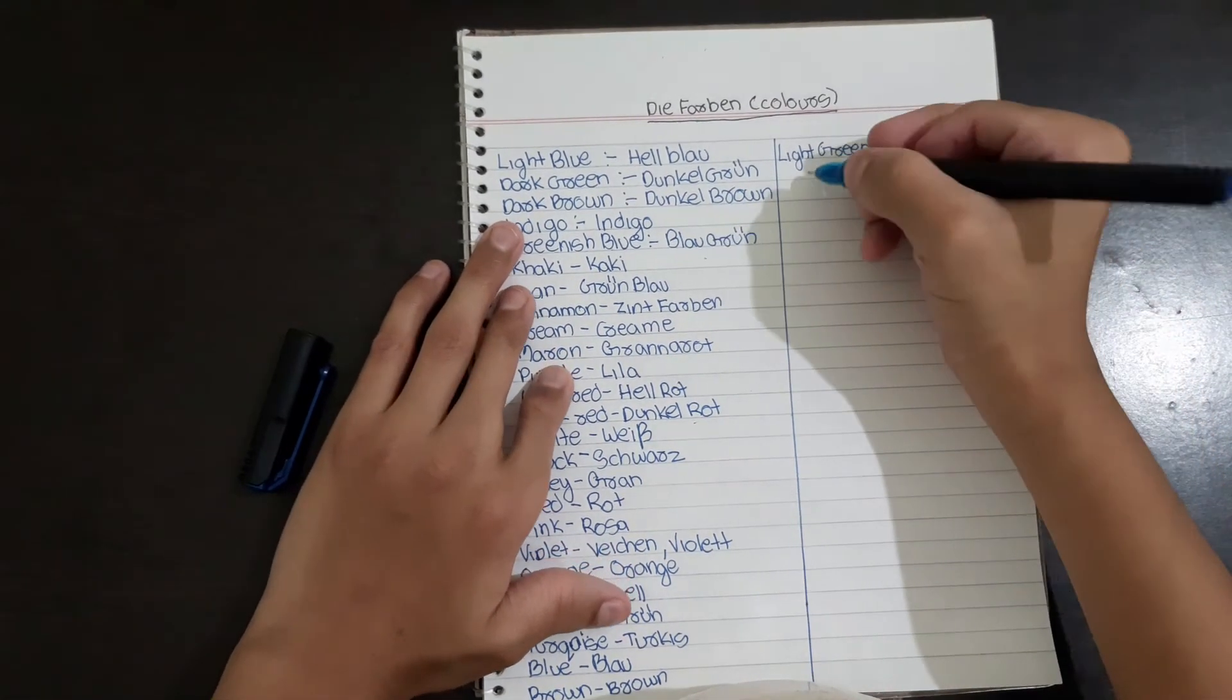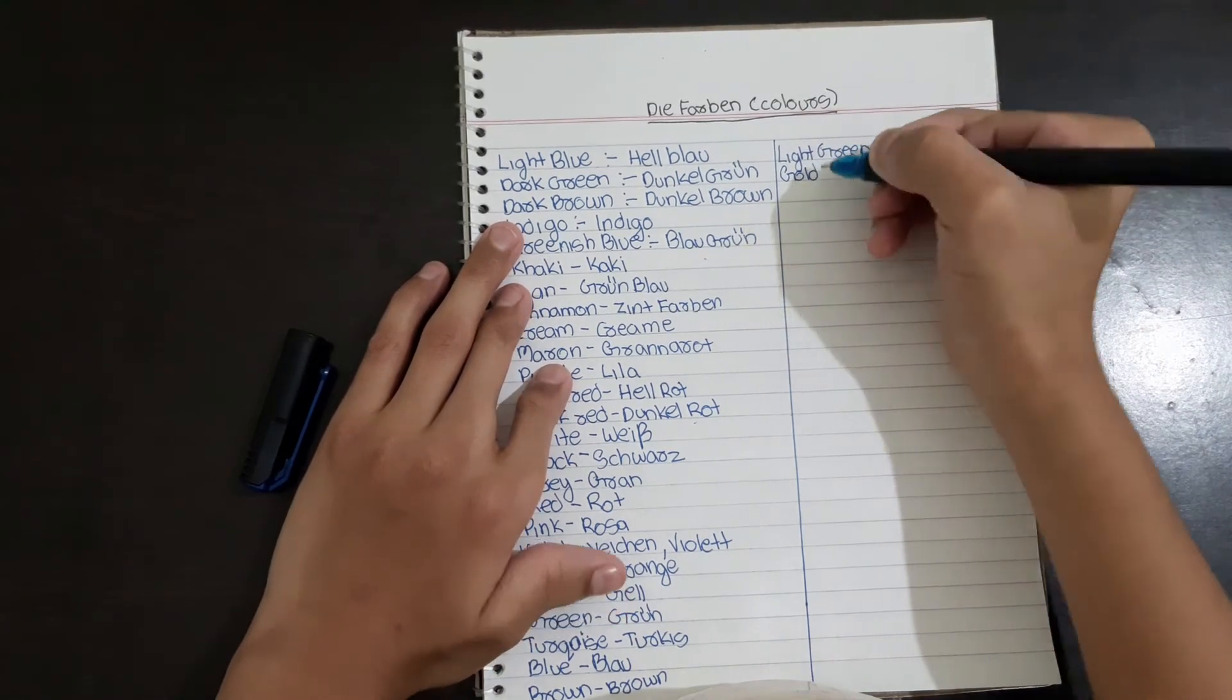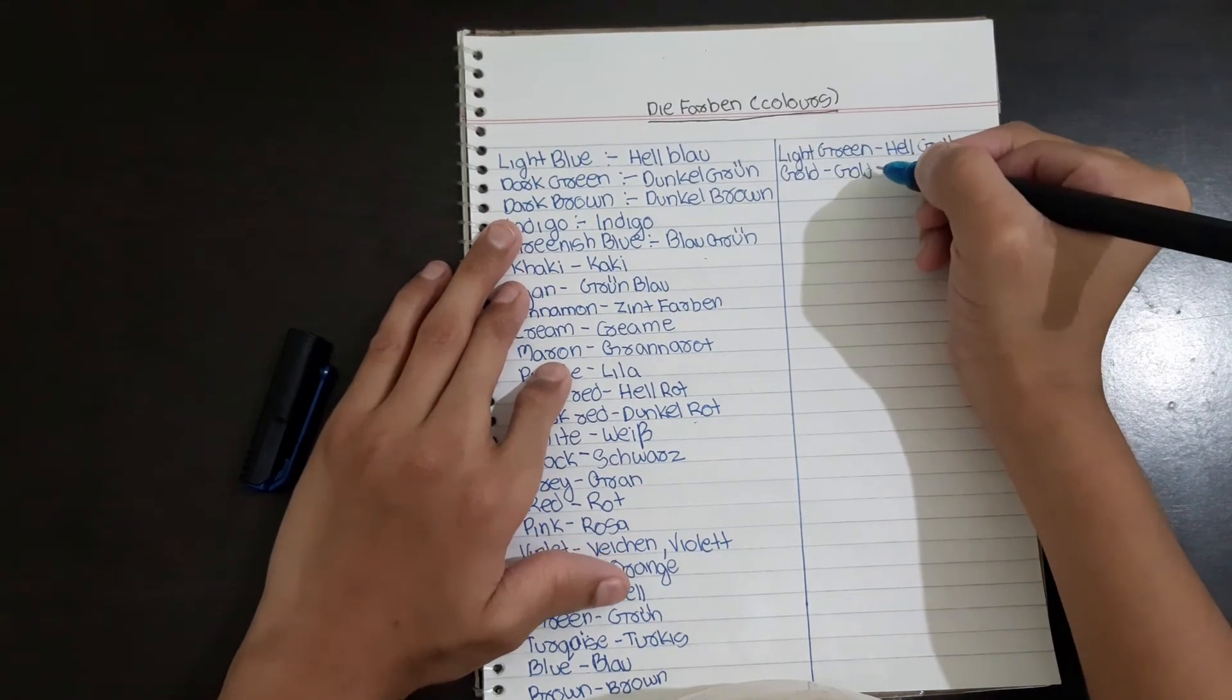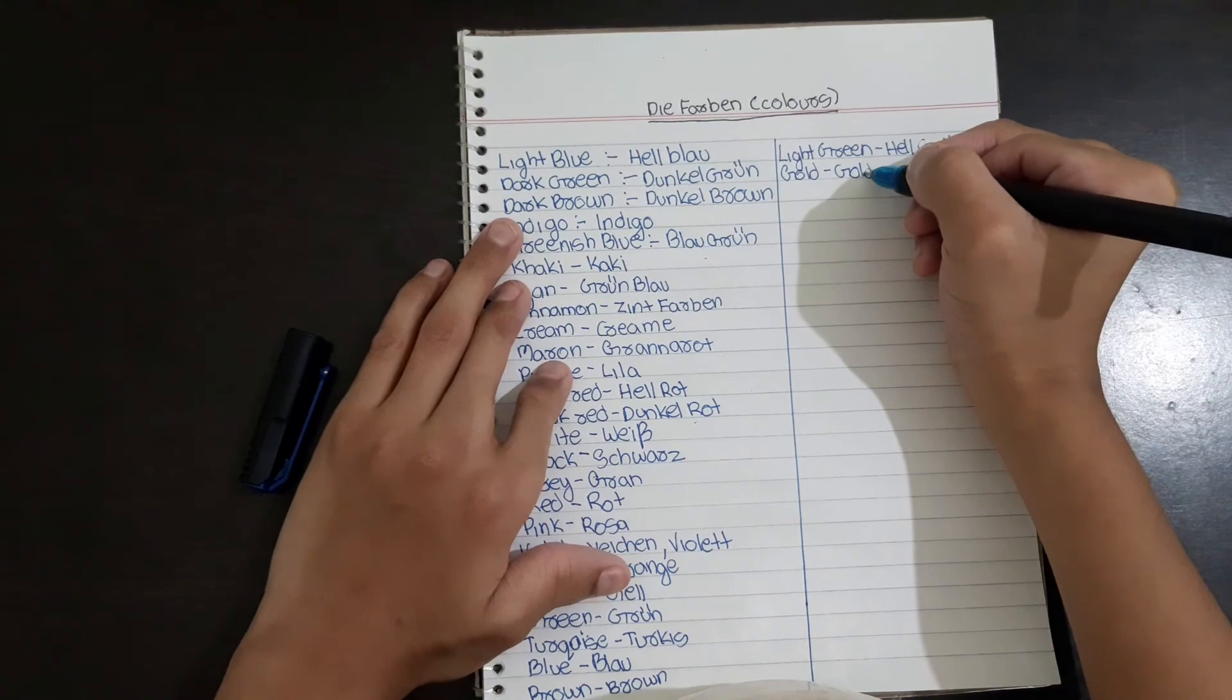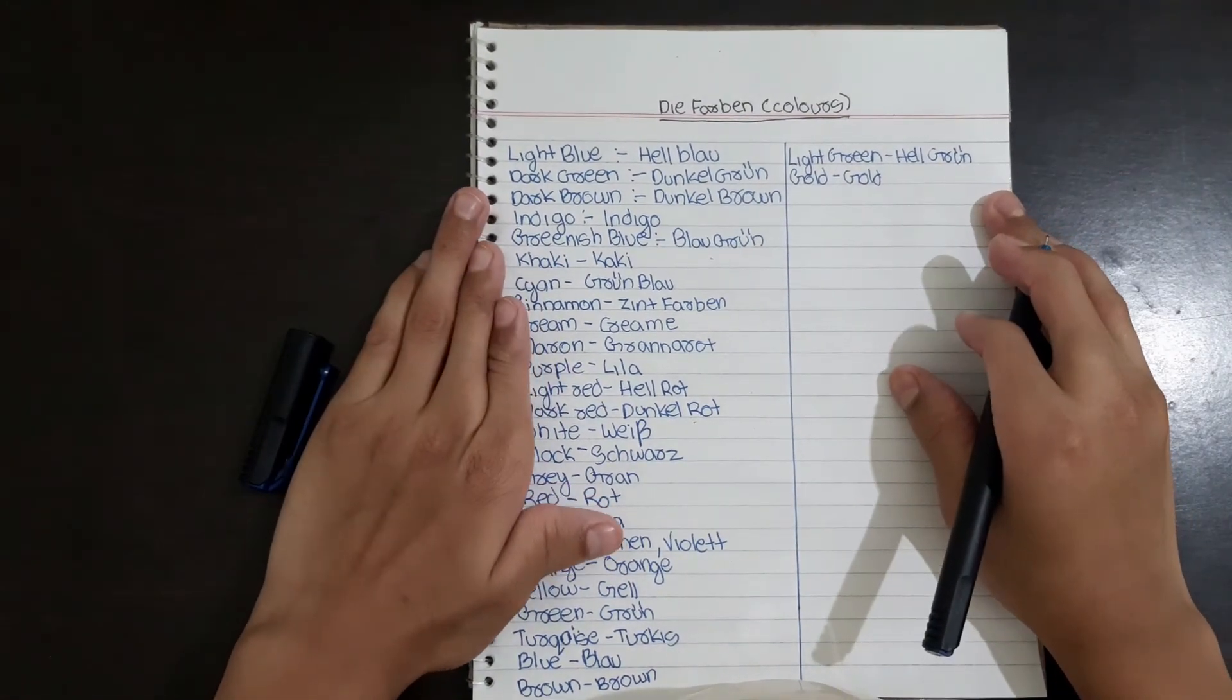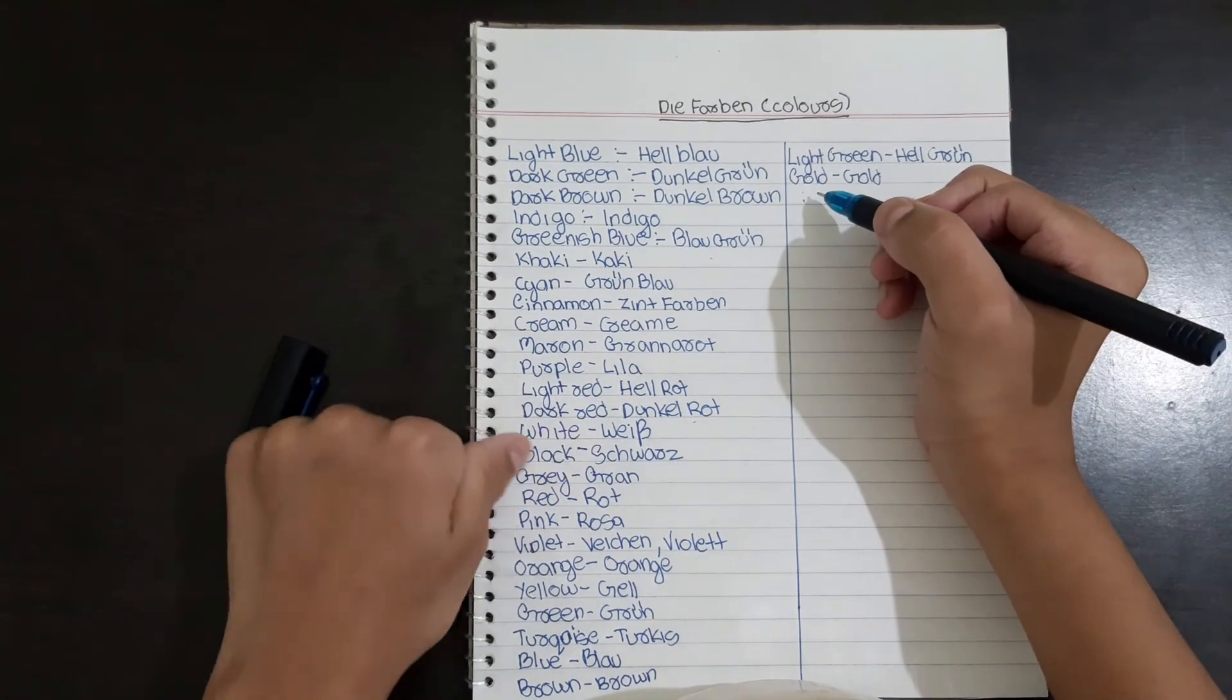Gold is also the same but the pronunciation is different. German gold is Gold, and in English we pronounce it as gold.